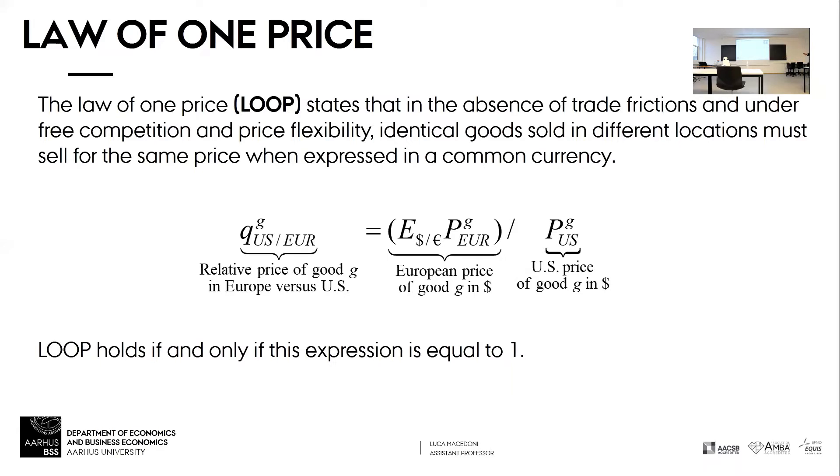First we have a law called the law of one price, which basically states that the price of a good should be the same everywhere. The price of that computer must be the same in Denmark vis-a-vis the same price, the price of the same good in the US.